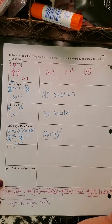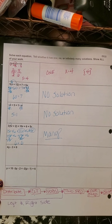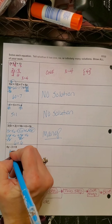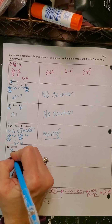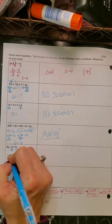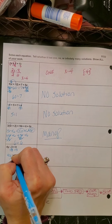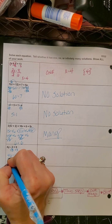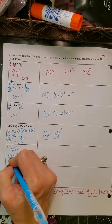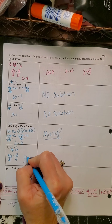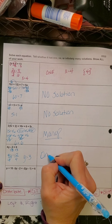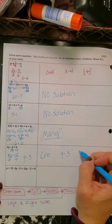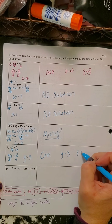Right here I can look at that and tell you I have one solution because it's just a basic one-step equation. Add 3 to both sides: 4Y = 12. Divide both sides by 4 and Y equals 3. So that's one solution, Y equals 3.